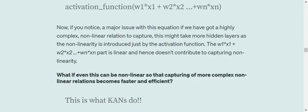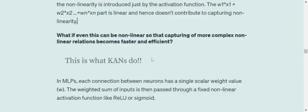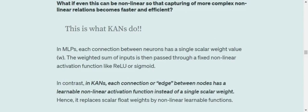So eventually it might take some time or such a neural network might not be able to capture high complexity relationships. What if this particular part where we are multiplying the scalar weights to the inputs can also be made non-linear so that eventually the network is able to capture non-linearity. So this is what KANs are doing.